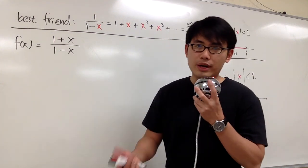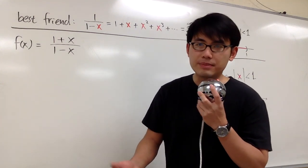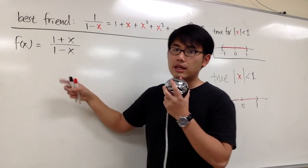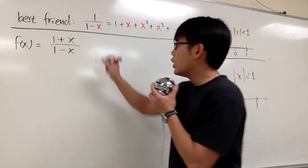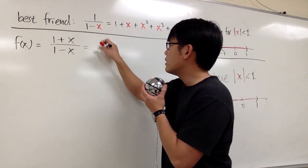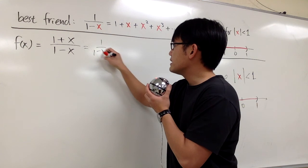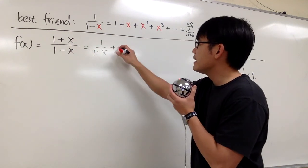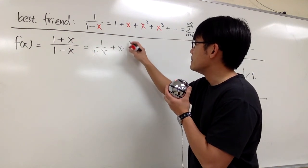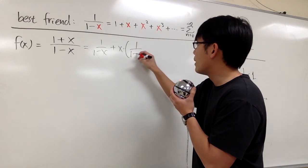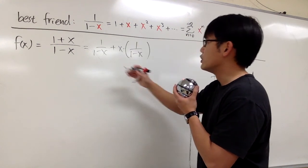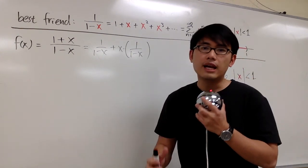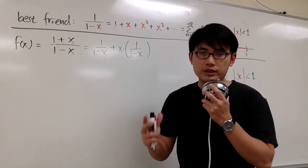Let me show you another way to write the power series expansion for (1+x)/(1-x). Just like my first video, we will look at this as 1/(1-x), and then plus x times 1/(1-x). The different thing I'm going to do in this video is that I will just work with the sigma notation.